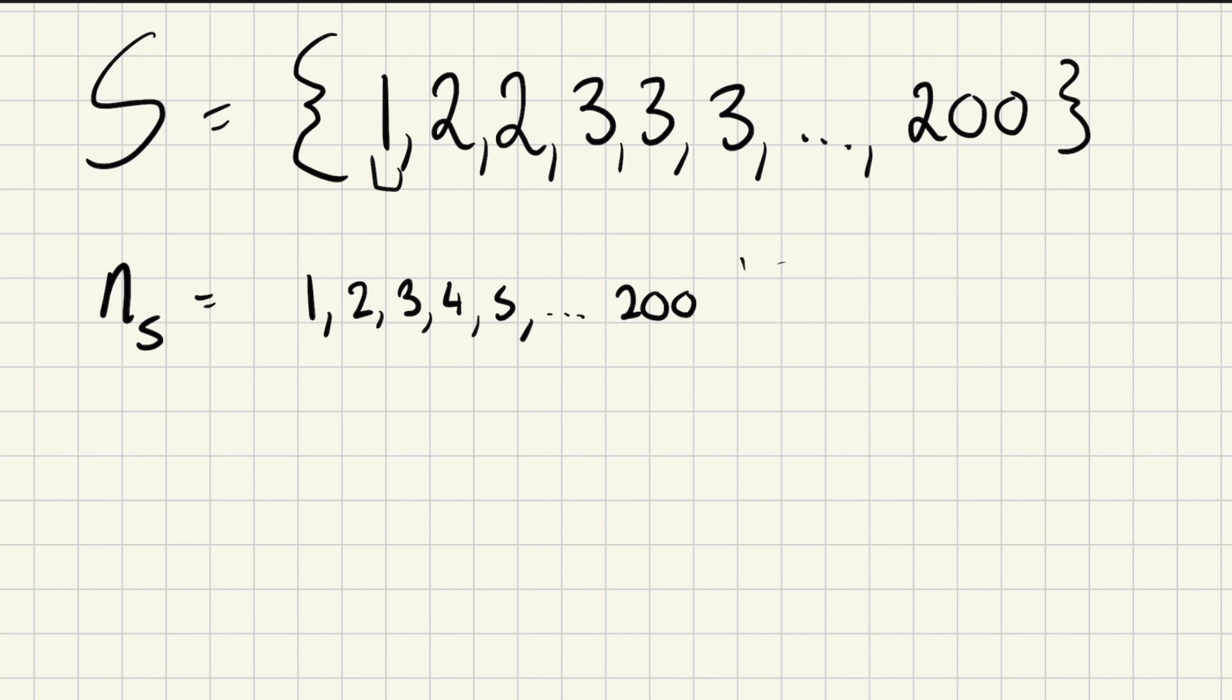Well, this is easy. This is just the sum from one to 200 of the natural consecutive numbers, so we can use this formula: n times n plus one over two. And this will give us, what is it, 100 times 201, which is 20,100. So there are 20,100 values.